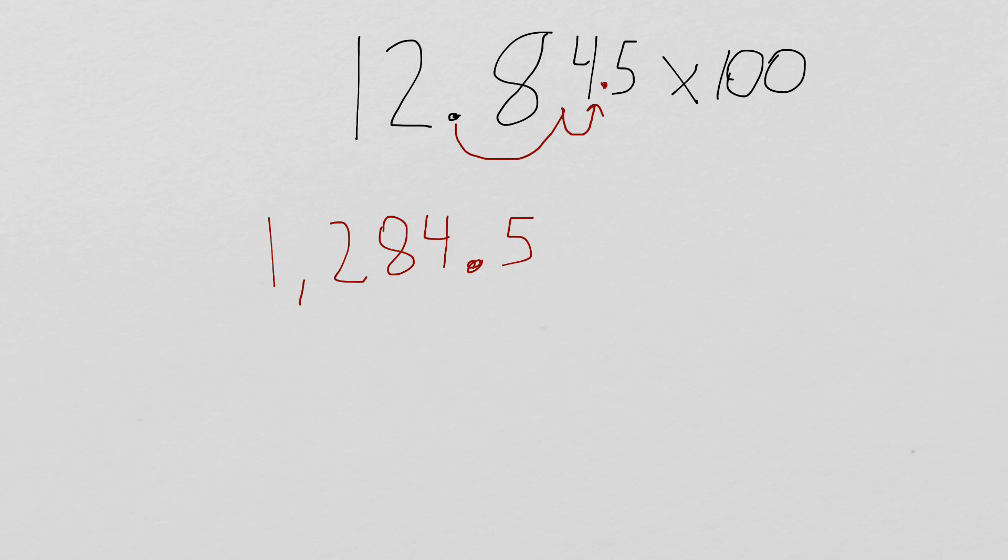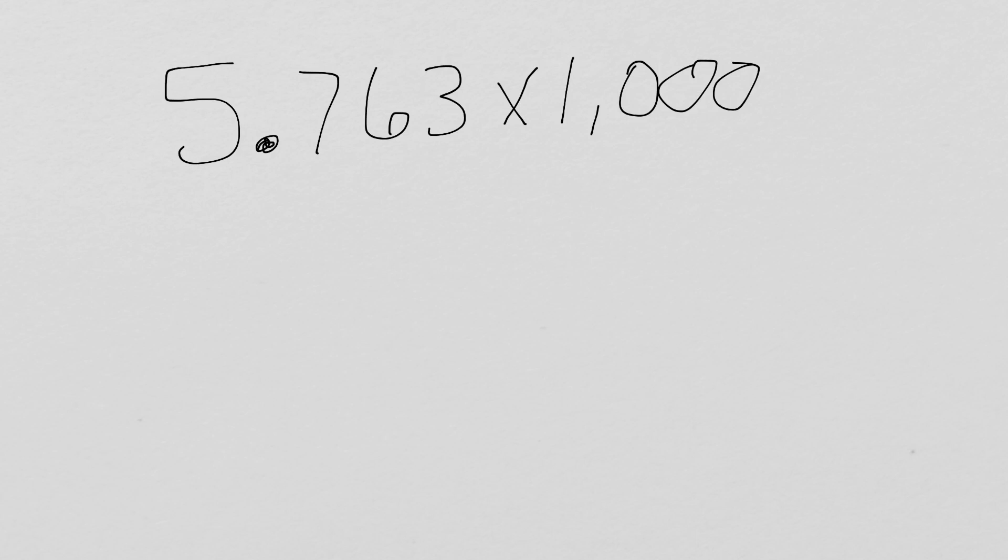So, give this next one a try on your own. I'm going to give you a different number, but see if you can figure out what happens. Alright, so try your knowledge at this problem. 5 and 763 thousandths times 1,000. Think about what happened when we multiplied by 10, and then we multiplied by 100. What do you think is going to happen when we multiply by 1,000?